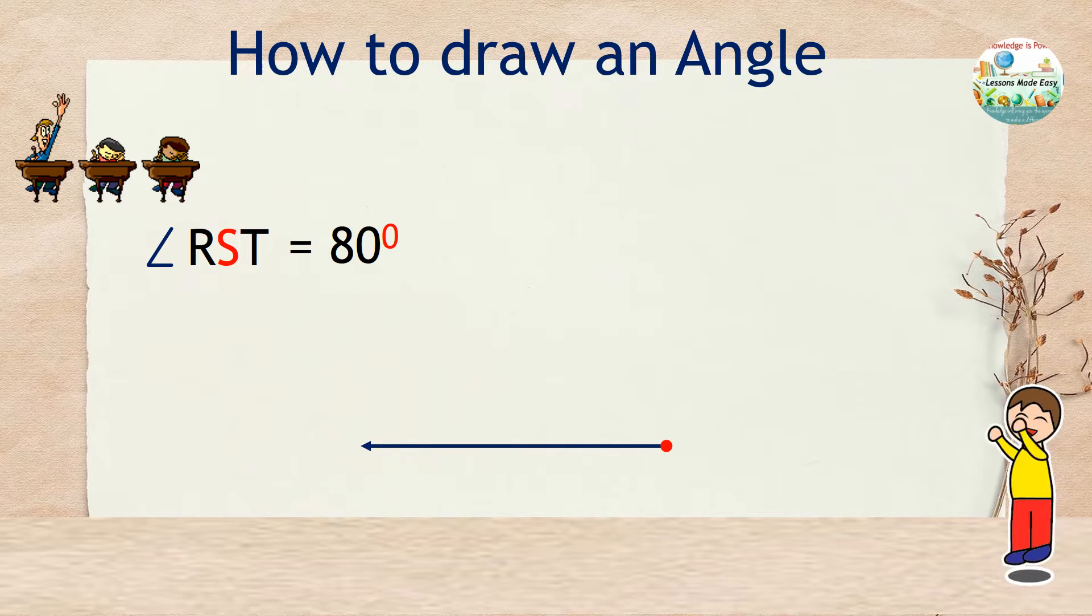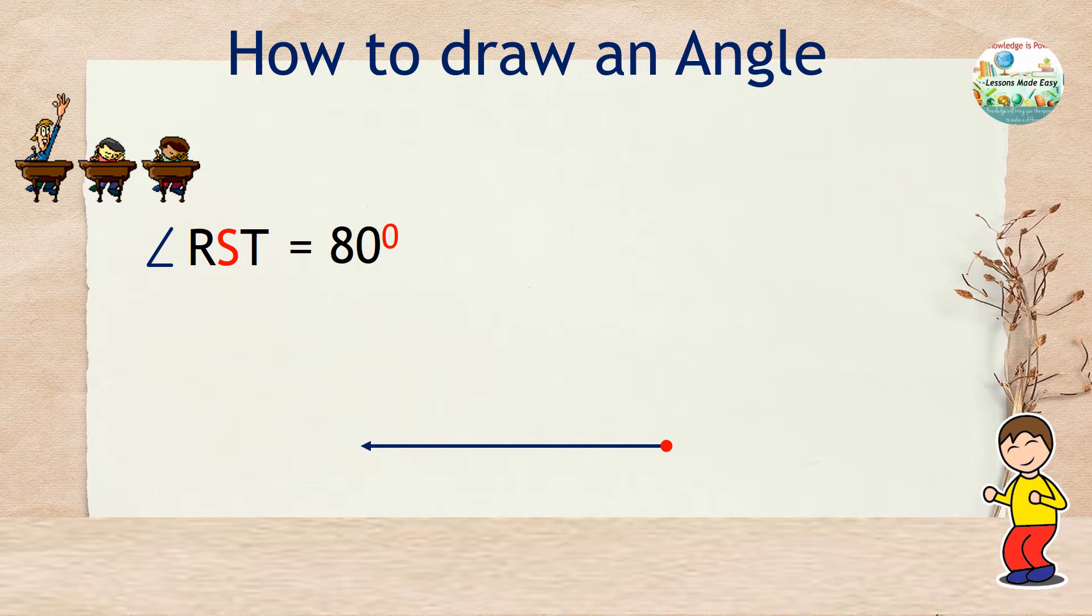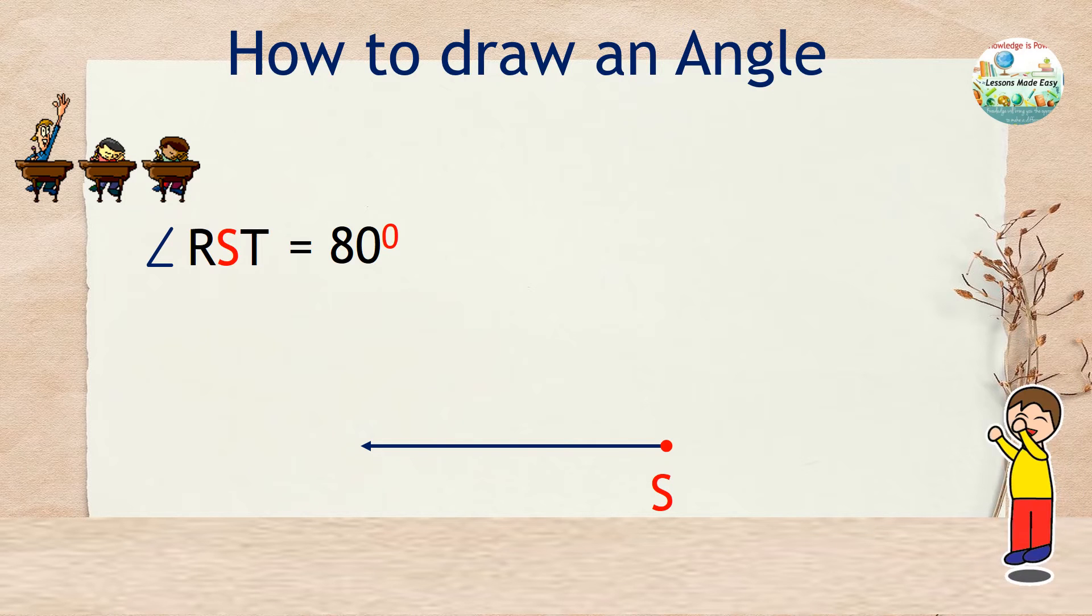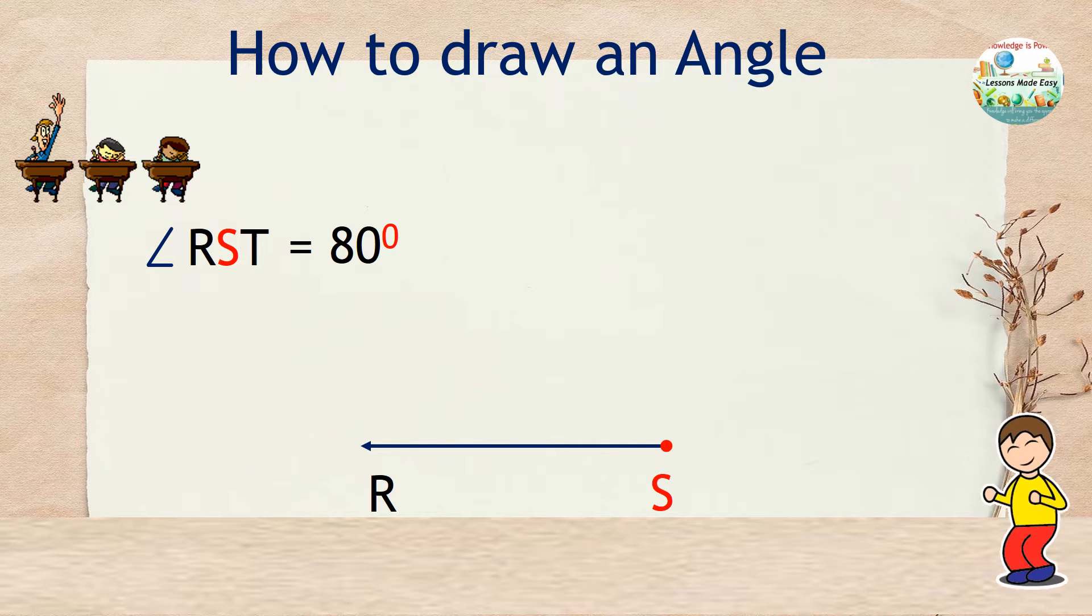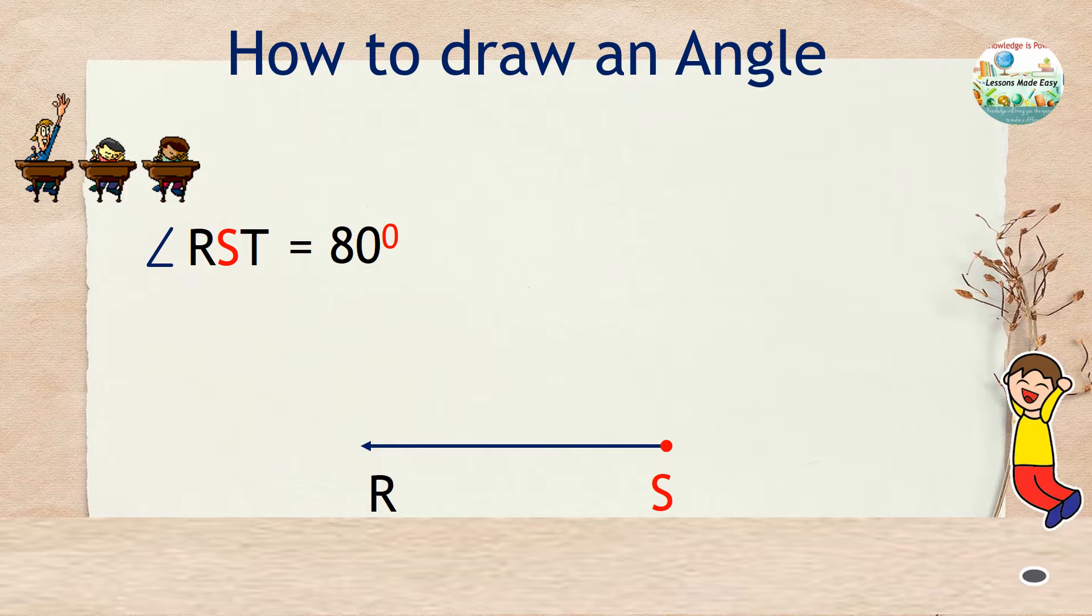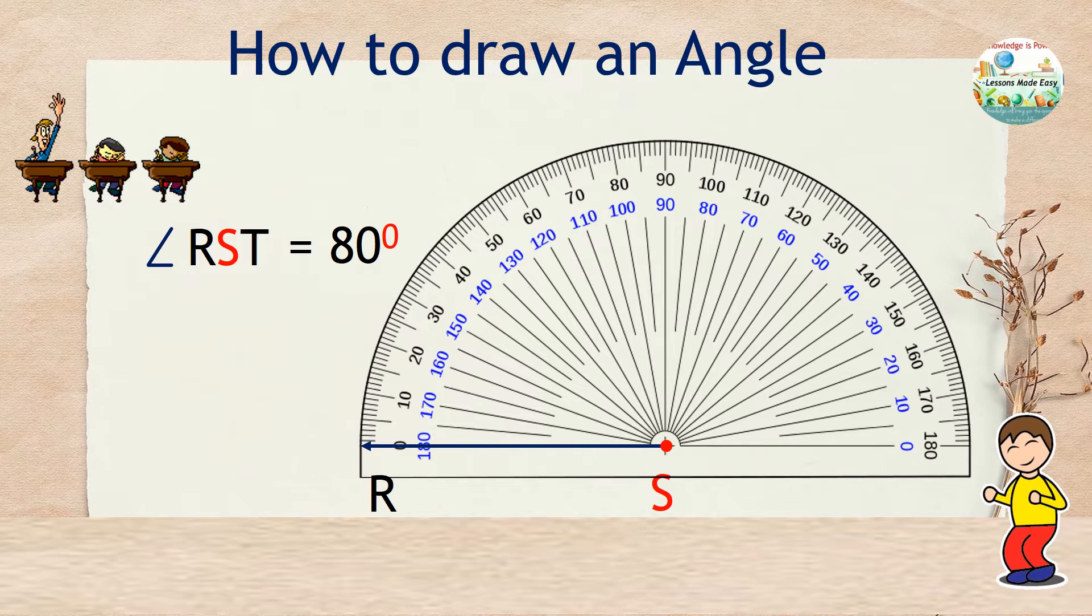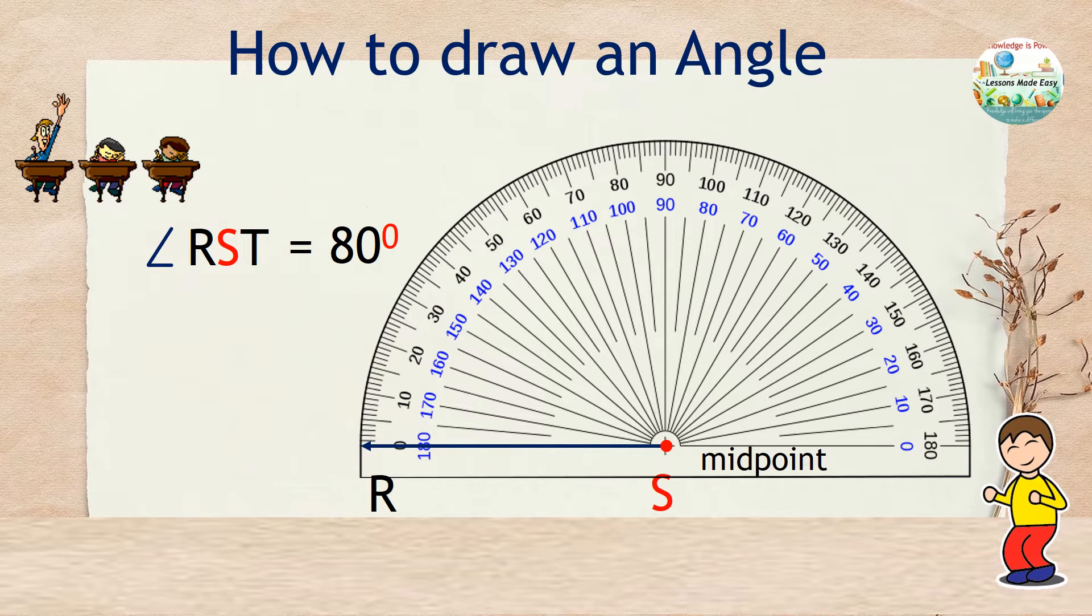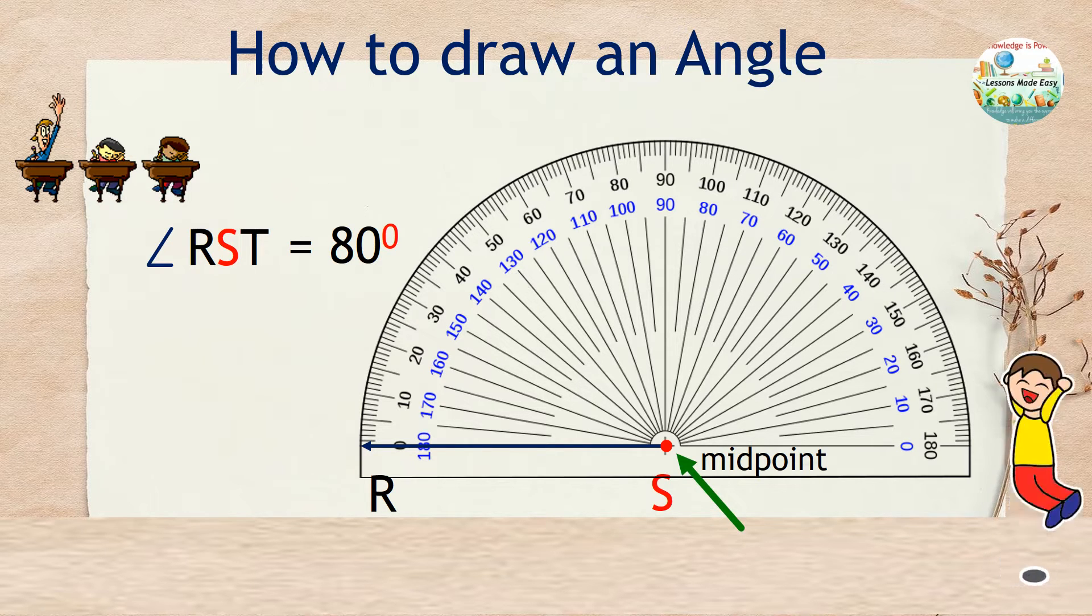The end point of this ray is the vertex, and that is point S. And the other can be R or T. Let's just name this R. Now grab your protractor and make sure that the baseline should be in line with the ray. And the midpoint must be directly over the vertex.